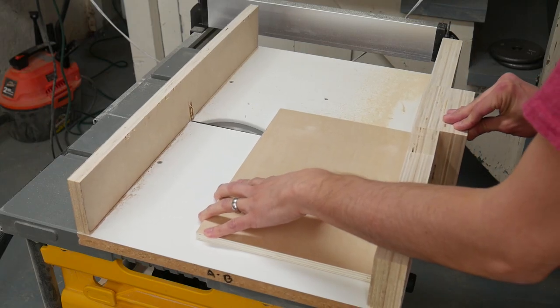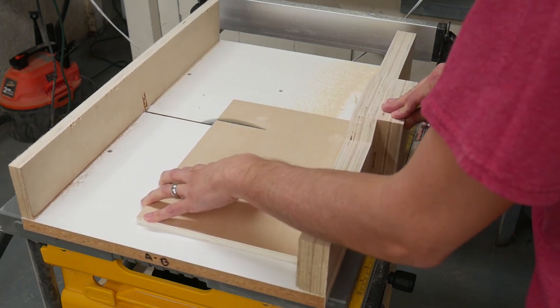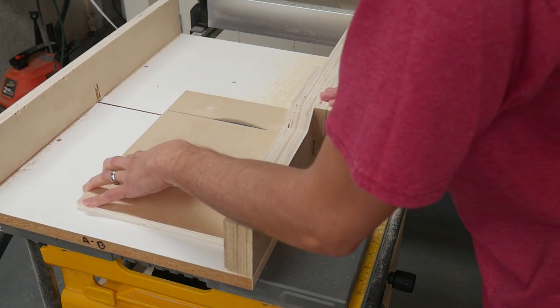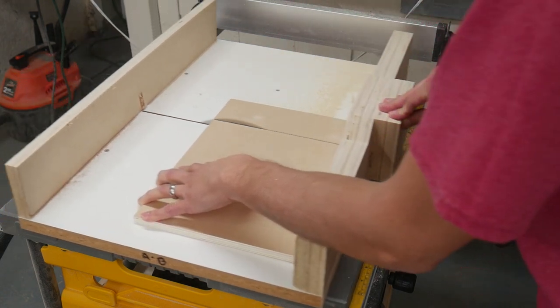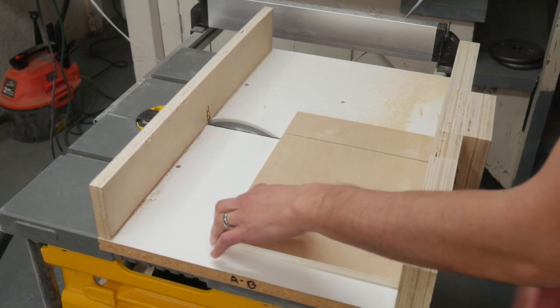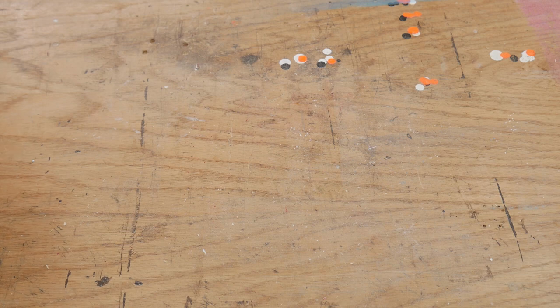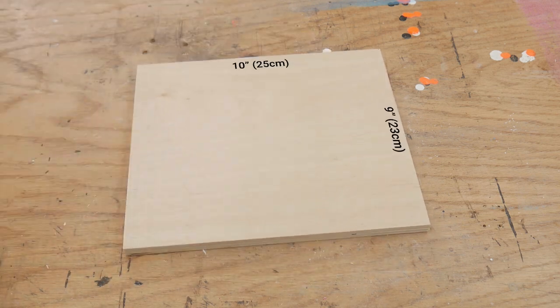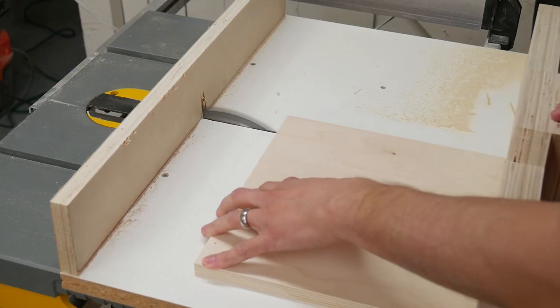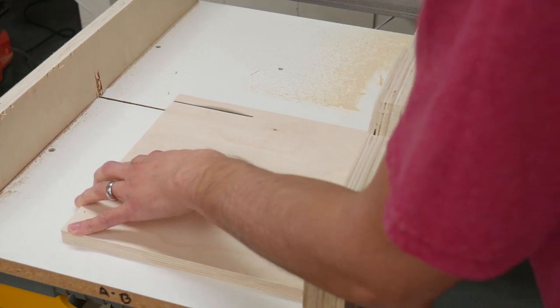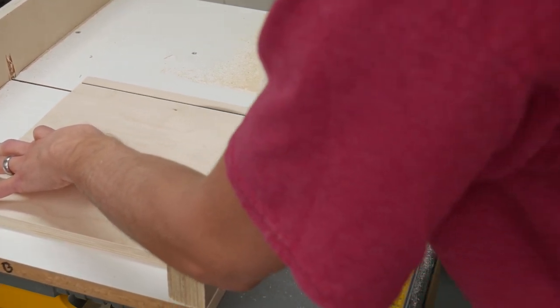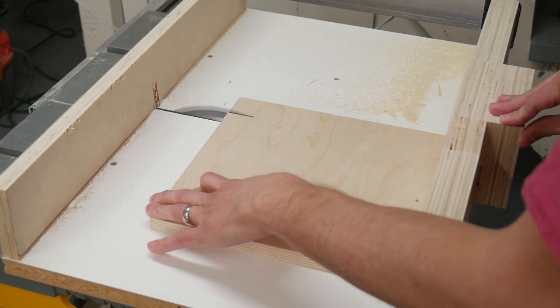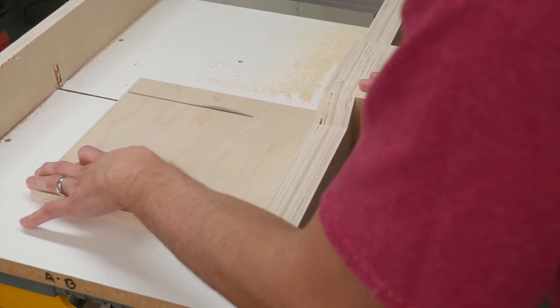I cut one piece of plywood to about 9 inches by 10 inches. I cut the other piece of plywood to 10 inches long and cut two strips that were each one and a half inches wide.